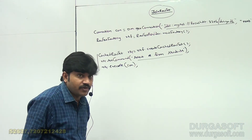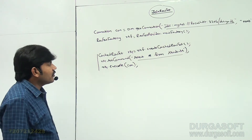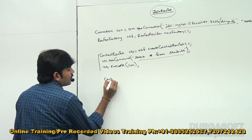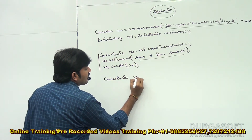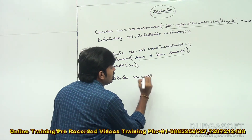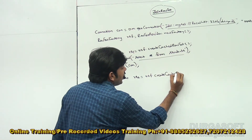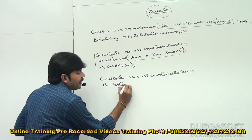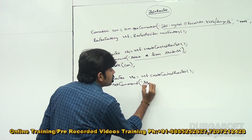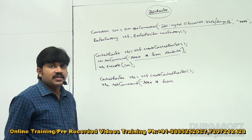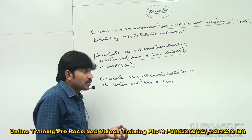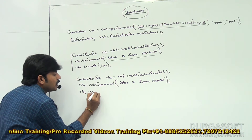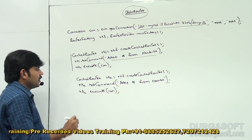Now create another CachedRowSet to hold the courses information: `CachedRowSet rs2 = rsf.createCachedRowSet()`. Set the command: `rs2.setCommand('select * from courses')`. Then execute: `rs2.execute(con)`. Now the second cached rowset contains courses information.